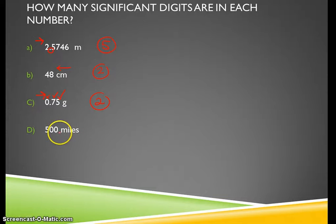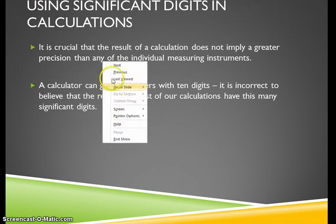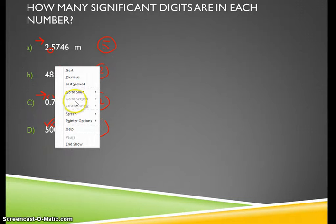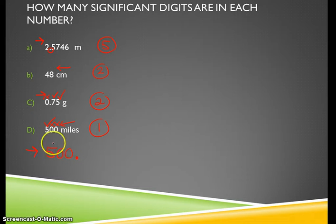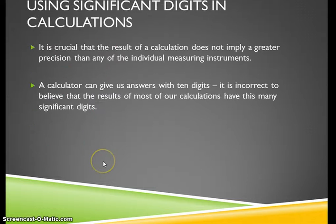Example D: 500 miles — decimal point is absent, so start counting from the Atlantic side. The first number encountered is a zero — not significant; next zero — not significant; the 5 — significant. So this has one significant digit. Note: if you write 500. with a decimal point present, you start from the Pacific side, and all three digits are significant — giving three significant digits.